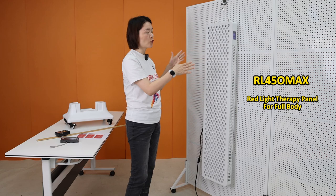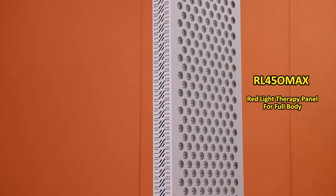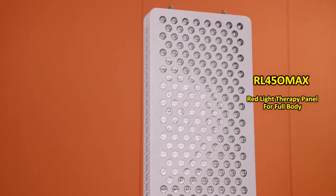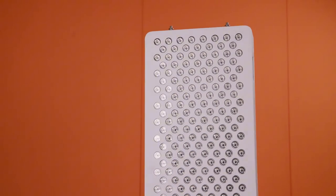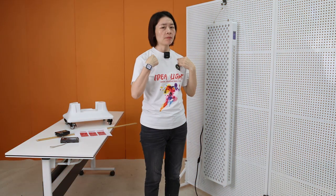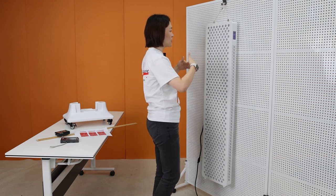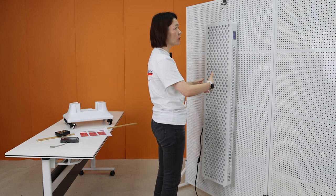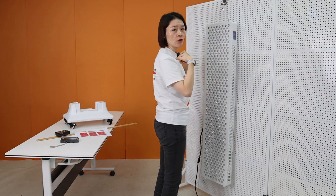So our RL450 Max. The dimension, the length is about 53.5 inches. The width is about 11.8 inches. You can see my height is about 170 centimeters. When I stand in front of the panel, it's very good size for me.